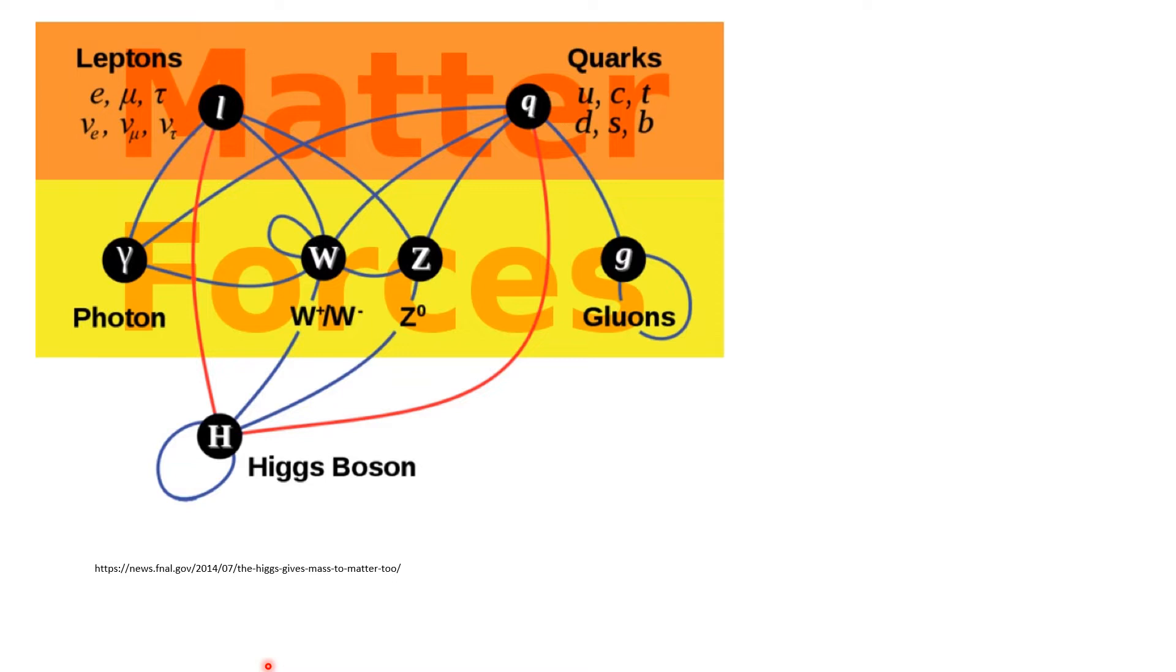Remember, we said that the Higgs boson is what gives these particles, like the electron, like the W particle and the Z particle, like the quarks, their masses. It is interacting with the Higgs field that gives these particles their masses.